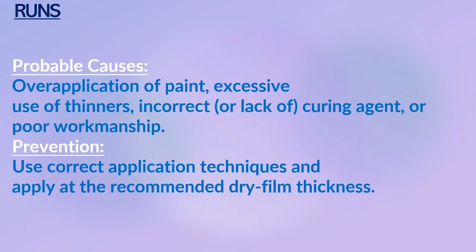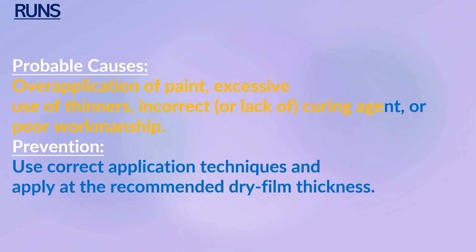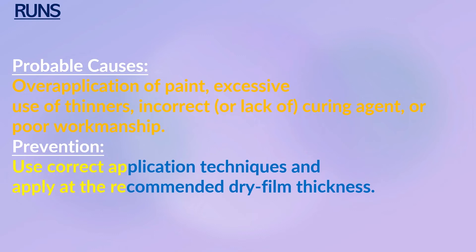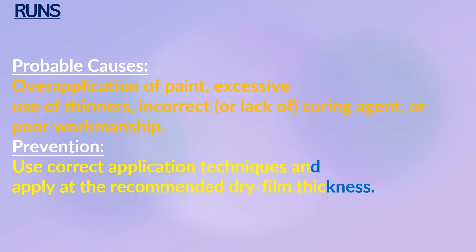Runs: a narrow downward movement of a coat of paint, often appearing from accumulation of excessive quantities of paint at irregular areas such as cracks and holes, where the paint continues to flow after the surrounding surface has set. Probable causes: over-application of paint, excessive use of thinners, incorrect curing agent, or poor workmanship. Prevention: use correct application techniques and apply at the recommended dry film thickness.